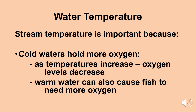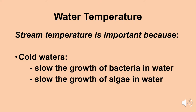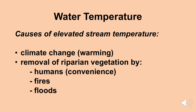Stream temperature is also important because cold waters slow the growth of bacteria and algae in water, both of which can be detrimental to fish. The causes of elevated stream temperature are fairly obvious. Of course, today we talk about climate change — areas of the planet are getting warmer, so we're probably going to see our streams get a little bit warmer, putting stress on fish. But probably the main reason elevated stream temperatures are occurring is the removal of riparian vegetation along stream banks.